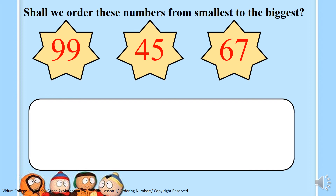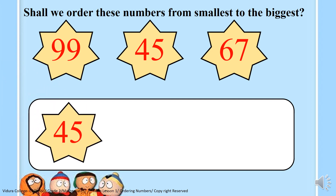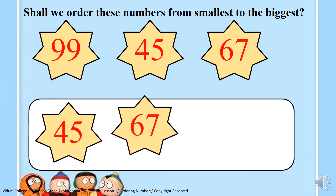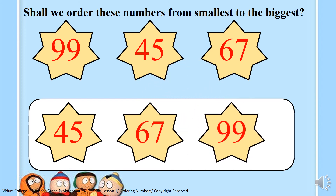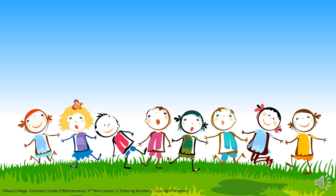Now here is an activity for you to do. You have to order these numbers from smallest to the biggest. Do this and then check whether your answers are correct — teacher is going to put the answers here. We have to order from smallest, so we start from the smallest number, which would be number 45. Then we have number 67. And then the biggest number would be number 99.